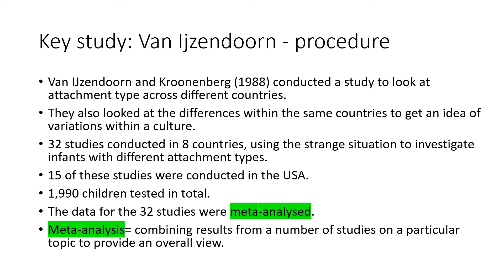So first we'll look at the key study of Van Ijzendoorn in terms of the procedure. Van Ijzendoorn and Kroonenberg 1988 conducted a study to look at attachment type across different countries. They conducted 32 studies in eight countries using the strange situation to investigate infants with different attachment types, and also looked at differences within the same countries. Of the 32 studies, 15 were conducted in the USA and 1990 children were tested in total. This study is a meta-analysis, combining results from a number of studies on attachment types to provide an overall view.